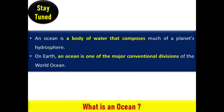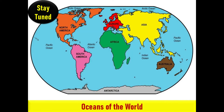First of all, let's see what is an ocean. An ocean is a body of water that composes much of a planet's hydrosphere. On Earth, an ocean is one of the major conventional divisions of the world ocean. These are, in descending order by area, the Pacific, Atlantic, Indian, Southern or Antarctic, and Arctic oceans.